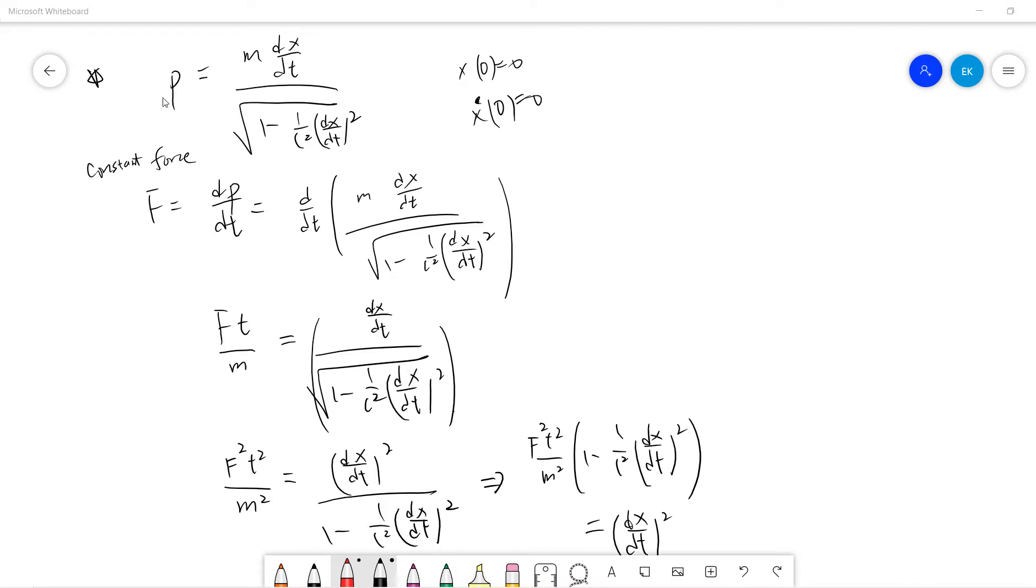So the problem is that in classical physics, there is no gamma factor. So you can keep accelerating this M to arbitrary speed. So the speed can be infinity since there is no constant, there is no gamma factor here.